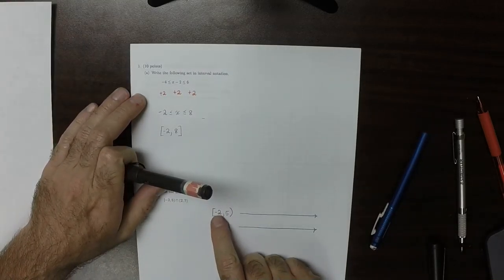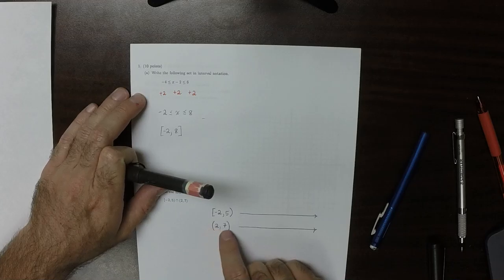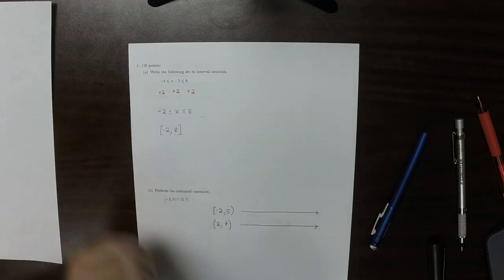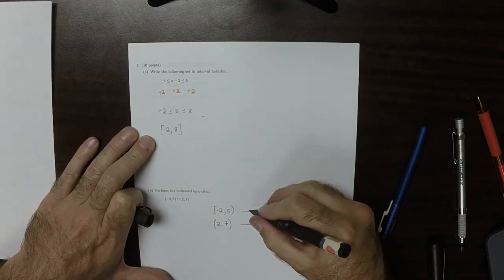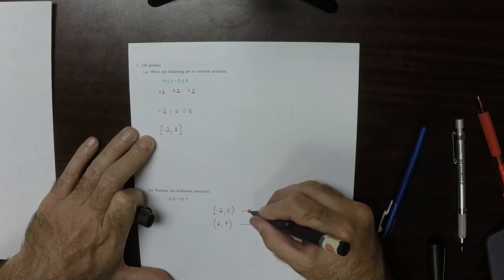of the four endpoints, negative 2, 5, 2, negative 7, 5 is furthest to the left, and it's closed. So negative 2 is here.